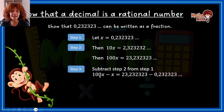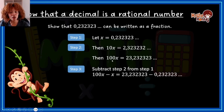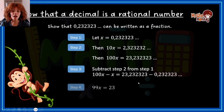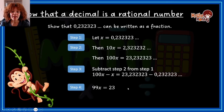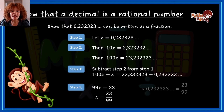Subtracting x from 100x: on the left we get 99x, and on the right 23.2323 minus 0.2323 equals 23. So 99x equals 23. Dividing both sides by 99 gives us 23 over 99. We've shown that 0.232323... written as a fraction is 23 over 99 — that is the recurring decimal written as its rational fraction equivalent.